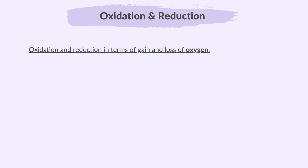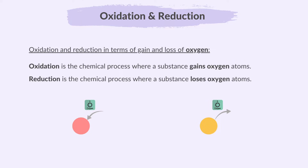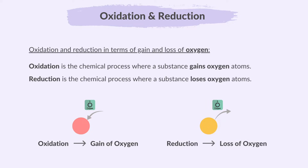First, let's look at oxidation and reduction in terms of gain and loss of oxygen. If we are looking at reactions specifically involving oxygen, oxidation is the chemical process where a substance gains oxygen atoms. Oxidation is the gain of oxygen and reduction is the loss of oxygen. When a substance gains oxygen, we say that it has been oxidized, and when it loses oxygen, we say it has been reduced.